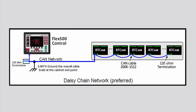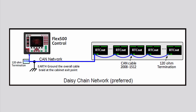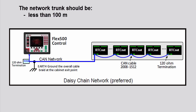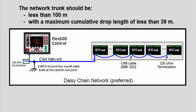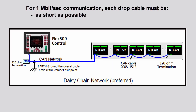If multiple connections need to be made, Woodward recommends daisy chain connections. Any drop cable connection of a device to the trunk line should be as short as possible and much less than 6 meters. It is recommended to design the network trunk to be less than 100 meters with a maximum cumulative drop length of less than 39 meters. For 1 megabit per second communication, each drop cable must be as short as possible and definitely less than 1 meter.